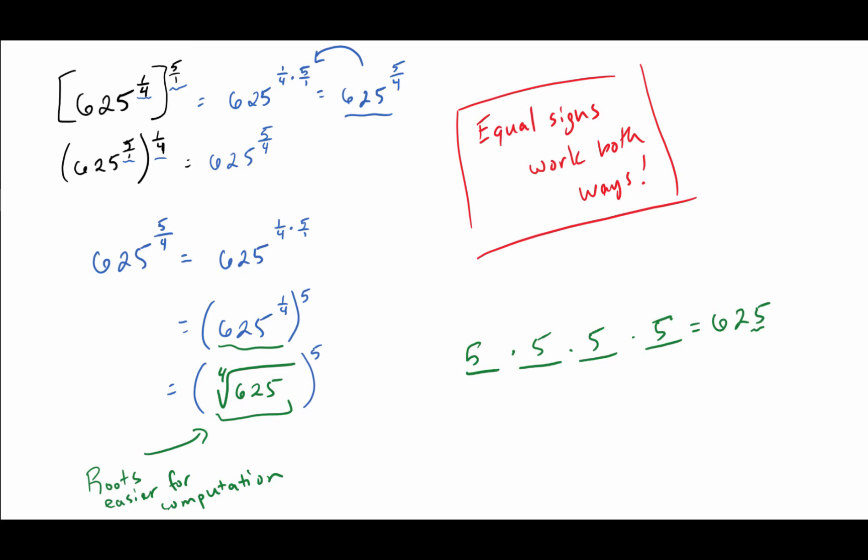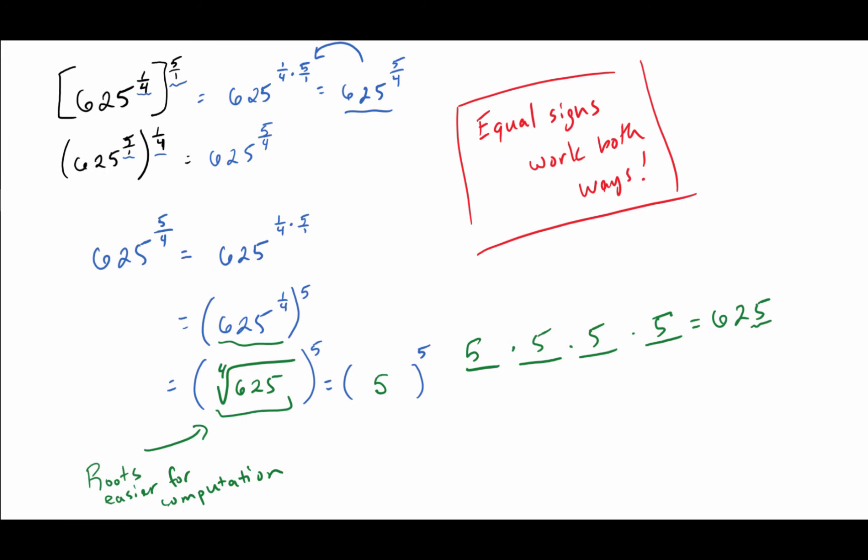Again, little pro tip: if it ends in a 5 it's divisible by 5. Not to say that necessarily means it was going to be the answer to this, but that means that I know that the thing I'm raising to the 5th power is really just 5. Based off of that, I can then evaluate this thing to completion because I know 5 to the 5th power ends up just being 3125.